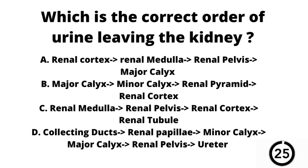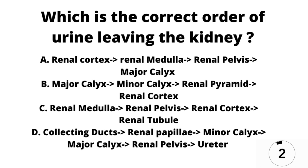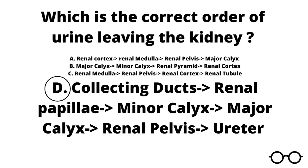Question number three. Which is the correct order of urine leaving the kidney? D. The collecting ducts to the renal papillae to the minor calyx to the major calyx, renal pelvis, and the ureter. Our answer here is D. The correct order is collecting ducts, renal papillae, minor calyx, major calyx, renal pelvis, and ureter.